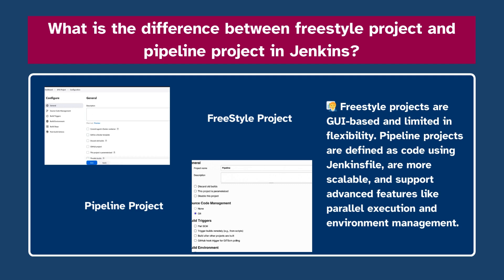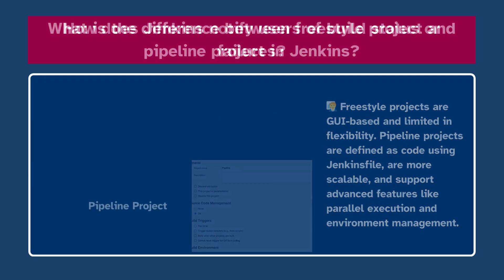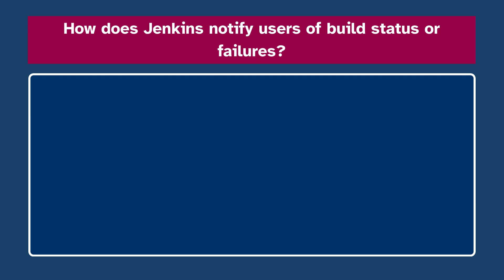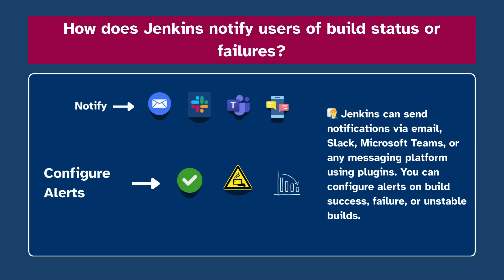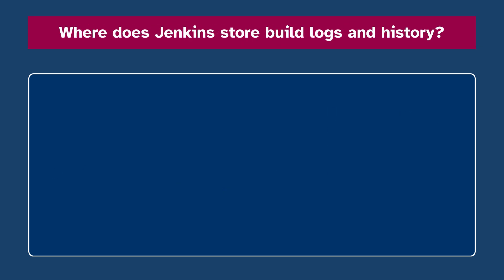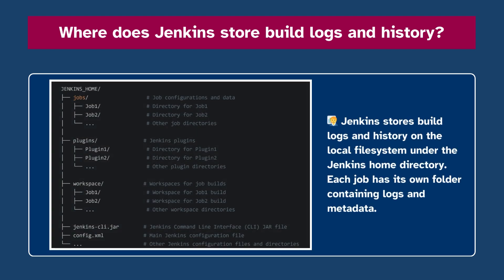Number thirteen: How does Jenkins notify users of build status or failures? Jenkins can send notifications via email, Slack, Microsoft Teams, or any messaging platform using plugins. You can configure alerts on build success, failure, or unstable builds. Number fourteen: Where does Jenkins store build logs and history? Jenkins stores build logs and history on the local file system under the Jenkins home directory. Each job has its own folder containing logs and metadata.